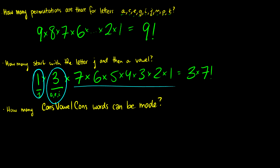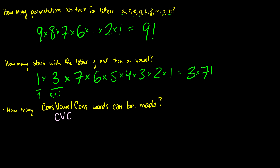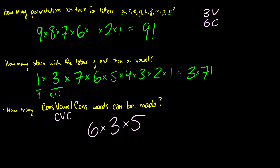This third one is a little bit more challenging. How many consonant-vowel-consonant words can be made? We pick a consonant, a vowel, and a consonant. We have three vowels and six consonants. For the first consonant we can pick six possible choices, for the vowel we have three choices, and for the second consonant we have five choices since we used one for the first. So that turns out to be 18 times 5, which is 90 possible choices.